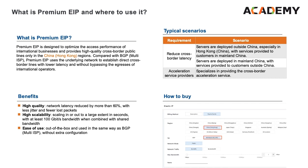There are three typical scenarios for Premium EIP. For example, web servers are deployed in Hong Kong and customers are from mainland China. Or the servers are in mainland China and the service is provided to customers in Hong Kong. Or it could be used for providing cross-border acceleration service. The picture in the bottom right shows how to purchase Premium EIP.